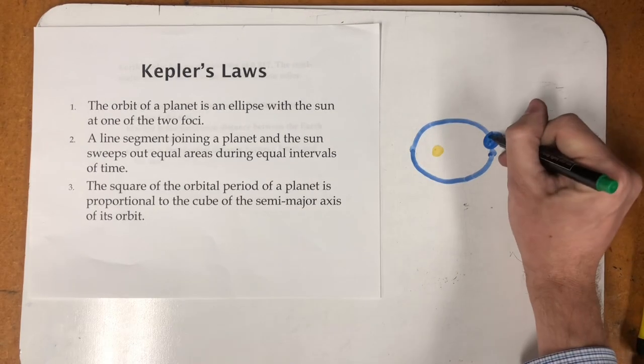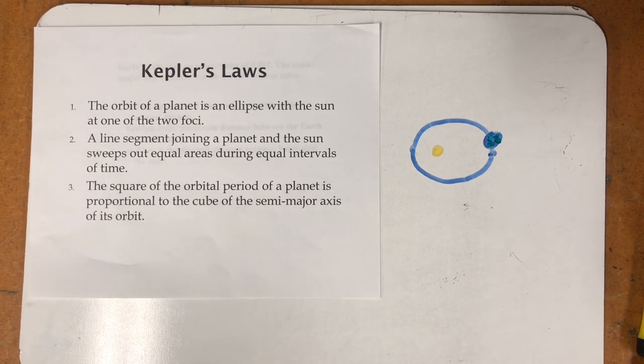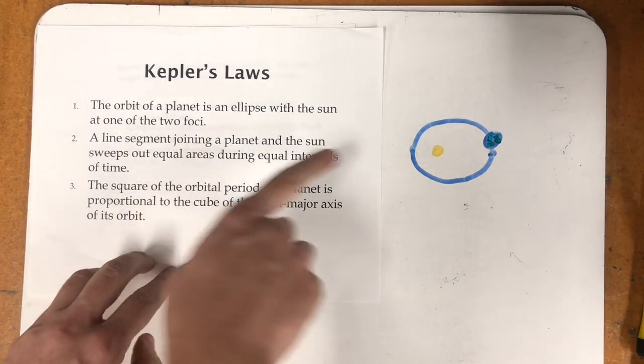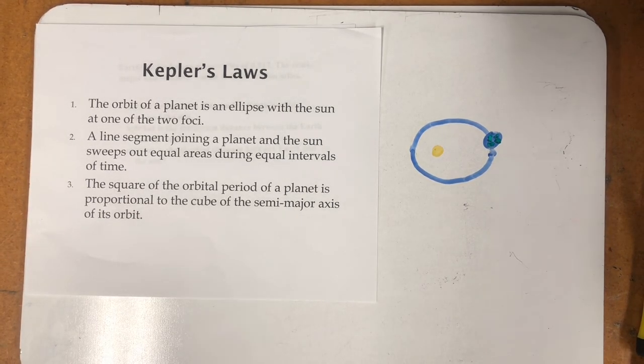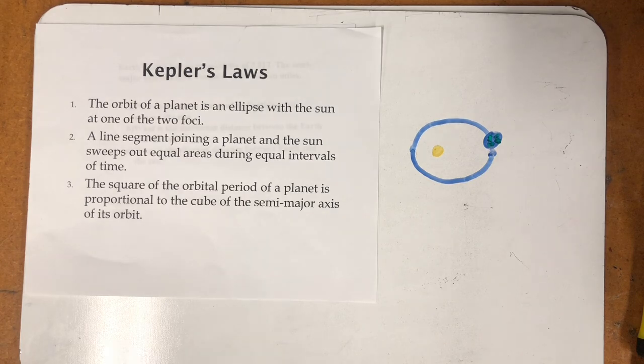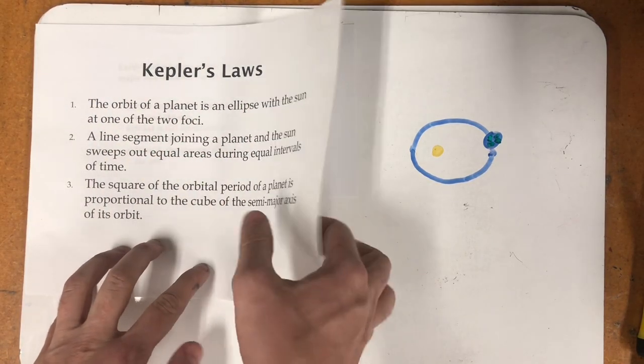And so let's see, there's a little planet Earth. So we're moving around our sun as an ellipse. Kepler's other two laws here: A line segment joining the planet and the sun sweeps out equal areas during equal intervals of time. The square of the orbital period of a planet is proportional to the cube of the semi-major axis. Those are things you might encounter in a physics class. For us right now, we're really just curious about this elliptical orbit.